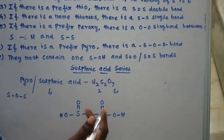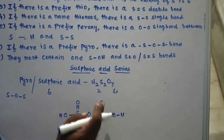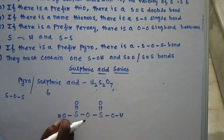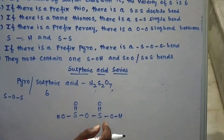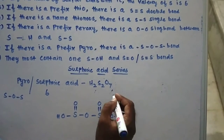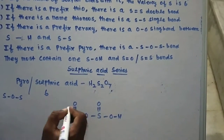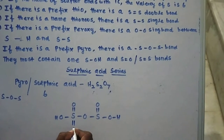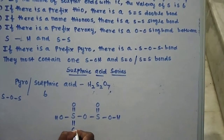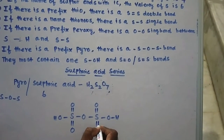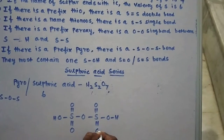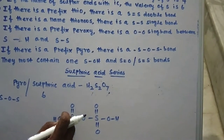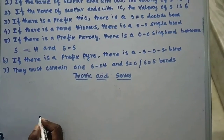Checking how many oxygens are consumed: 1, 2, 3, 4, 5 — and there are two hydrogens total. Since valency is 6, there is another S=O and another S=O on each sulfur. This completes the structure of pyrosulfuric acid.